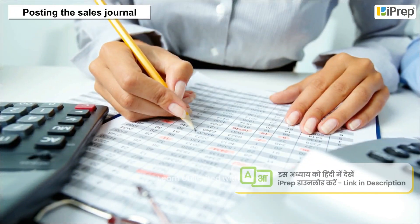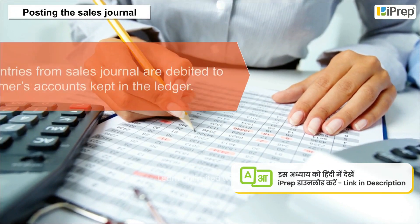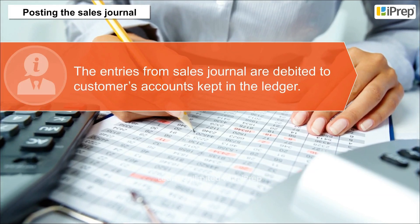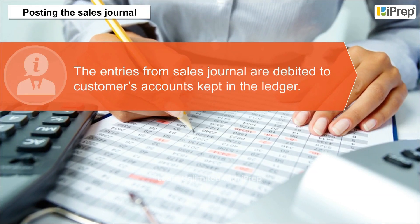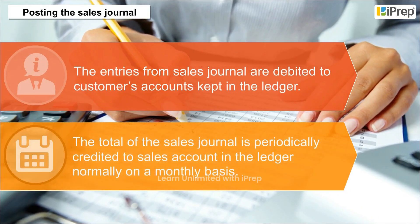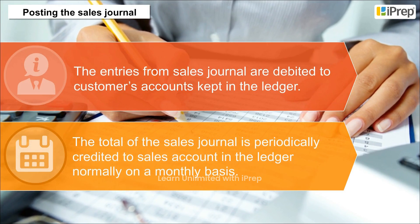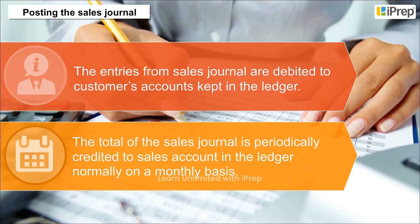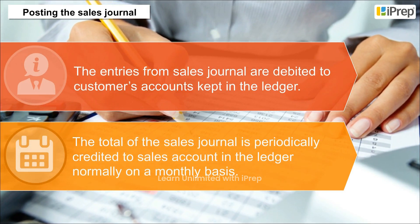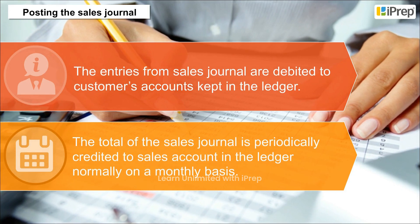Posting the Sales Journal. The entries from the Sales Journal are debited to customers' accounts kept in the ledger. The total of the sales journal is periodically credited to the sales account in the ledger, normally on a monthly basis.